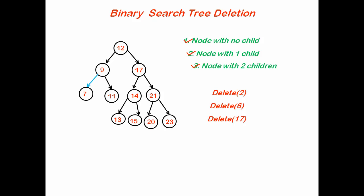There is another possible approach: instead of choosing the minimum from the right subtree, we can choose the maximum value from the left subtree and fill the deleted node with that value. The maximum value of the left subtree is 15, so we write 15 in place of 17, then delete 15 from the left subtree. The time complexity of the deletion operation is the same as search and insertion: O(log₂ n).